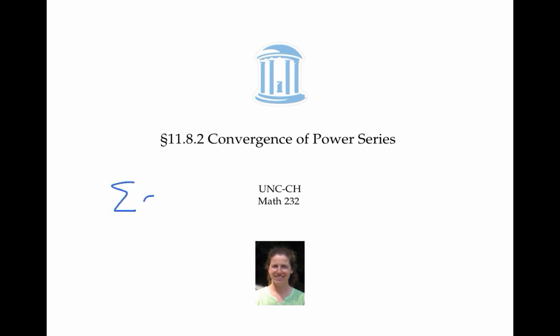Recall that a power series is a series with a variable in it. In this example, the c_n and the a are supposed to be real numbers held constant, so the only variable is x — that's the only place where I can plug in different values. This video explores the question of for what values of x does the power series converge, and for what values of x does it diverge.